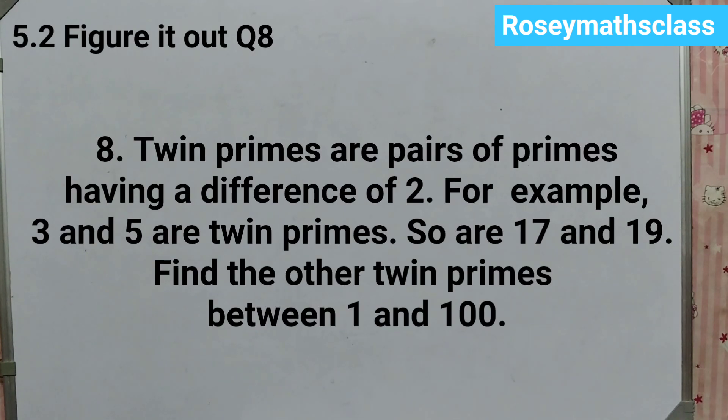Twin primes are pairs of primes having a difference of 2. For example, 3 and 5 are twin primes, so are 17 and 19. Find the other twin primes between 1 and 100.